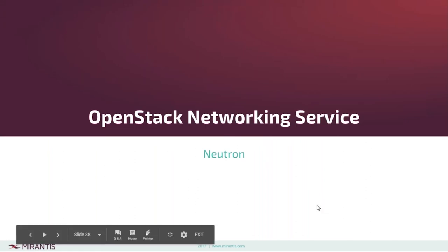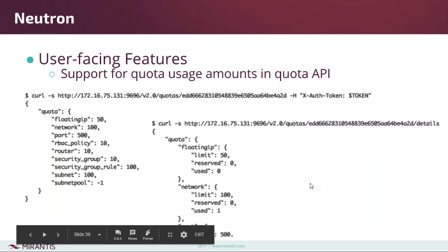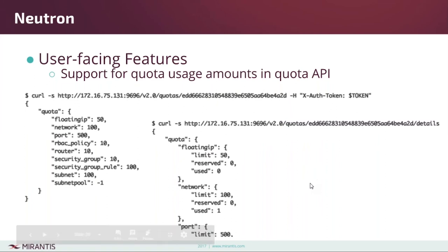Now let's hear about what's new in Neutron from Kevin. Starting with an easy change: like most OpenStack services, Neutron has support for setting limits on how many resources a particular project might consume — for example, two networks or ten floating IPs. The main limitation with the quota API was that you could get the limits for a given tenant but couldn't tell how many resources were actually in use. The only way was to list all resources and manually count them, wasting many API calls.